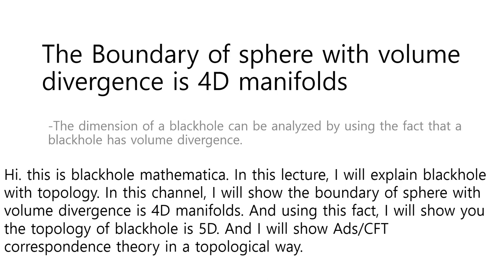The boundary of a sphere with volume divergence is a 4D manifold. The dimension of a black hole can be analyzed using the fact that a black hole has volume divergence. This is Black Hole Mathematica. In this lecture, I will explain black hole with topology. I will show the boundary of a sphere with volume divergence is a 4D manifold, and that the topology of a black hole is 5D. I will also show ADS-CFT Correspondence Theory in a topological way.